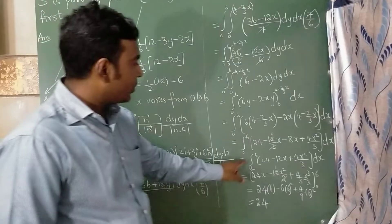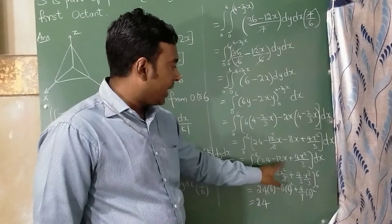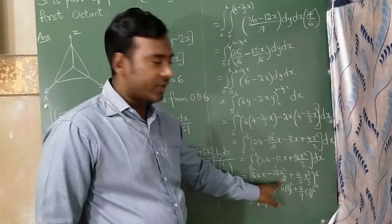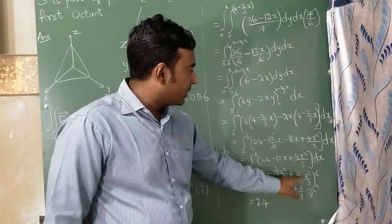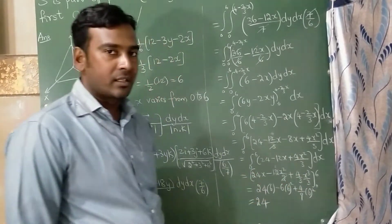Now I am going to integrate with respect to x. So this will become 24x minus 12x square upon 2 after integration plus 4 upon 3, x square will become x cube upon 3 after integration.